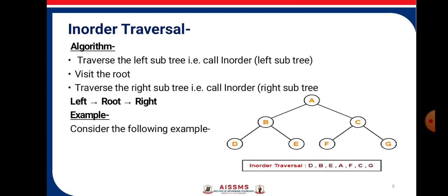In-order traversal: traverse the left subtree called in-order, then visit the root, and traverse the right subtree calling in-order. So the sequence is: first left, then root, then right.